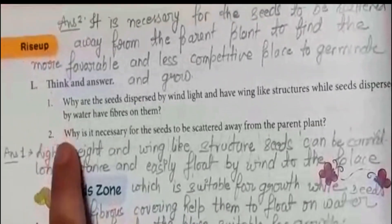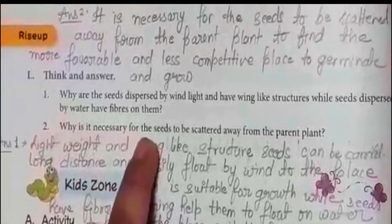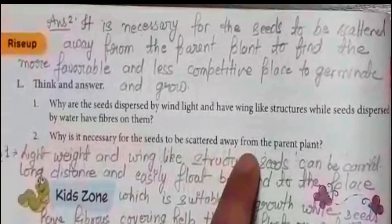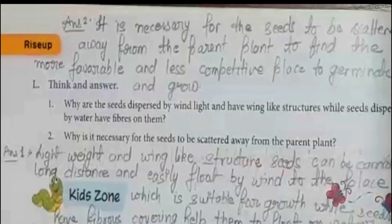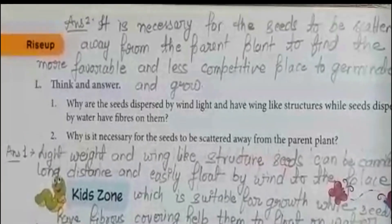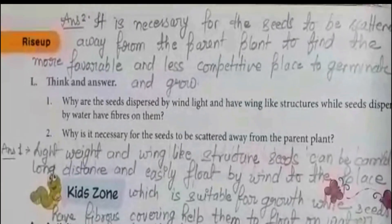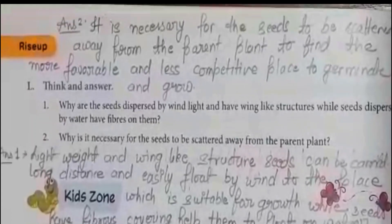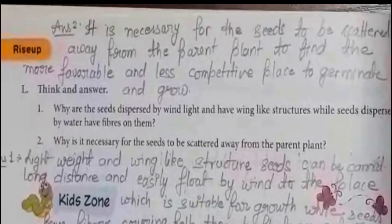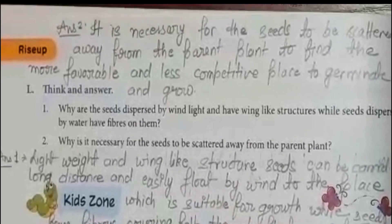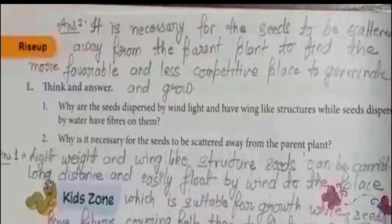Question number two: why is it necessary for the seeds to be scattered away from the parent plant? The answer is: it is necessary for the seeds to be scattered away from the parent plant to find a more favorable and less competitive place to germinate and grow.